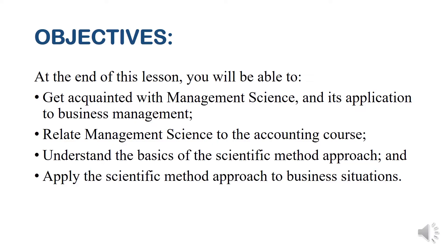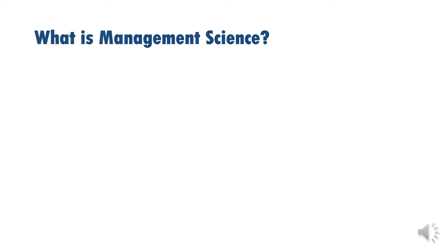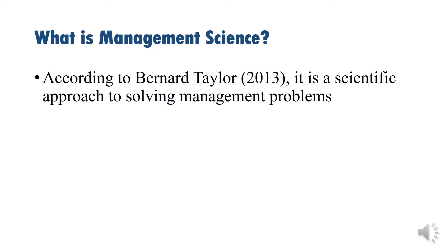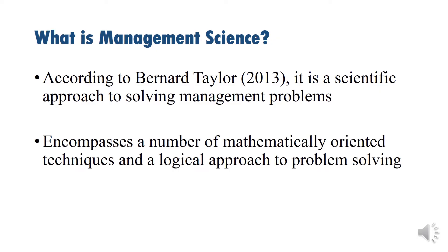Are you ready? Let's start! So, what is Management Science? How does Management Science relate to business? How does science help businesses and organizations resolve their problems? According to Bernard Taylor (2013), Management Science is a scientific approach to solving management problems. It encompasses a number of mathematical-oriented techniques and a logical approach to problem solving. Management Science helps businesses and organizations resolve their problems through a scientific approach.